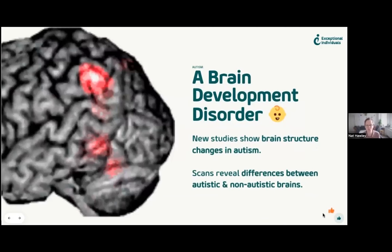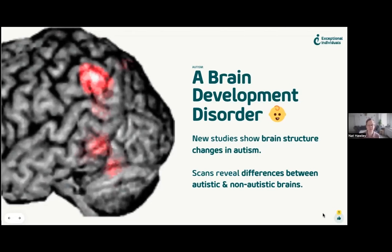Autism is a brain development disorder. New studies have shown that brain structure is different in autism, and from young adolescents to early teenage years there is a significant change. Brain scans reveal differences between autistic and non-autistic brains. This means that while we currently rely on psychology to observe, soon that may no longer be the case — AI might be able to diagnose autism just through looking at brain scans. Dyslexia isn't a disease, and autism isn't either — it's a different way of processing information.